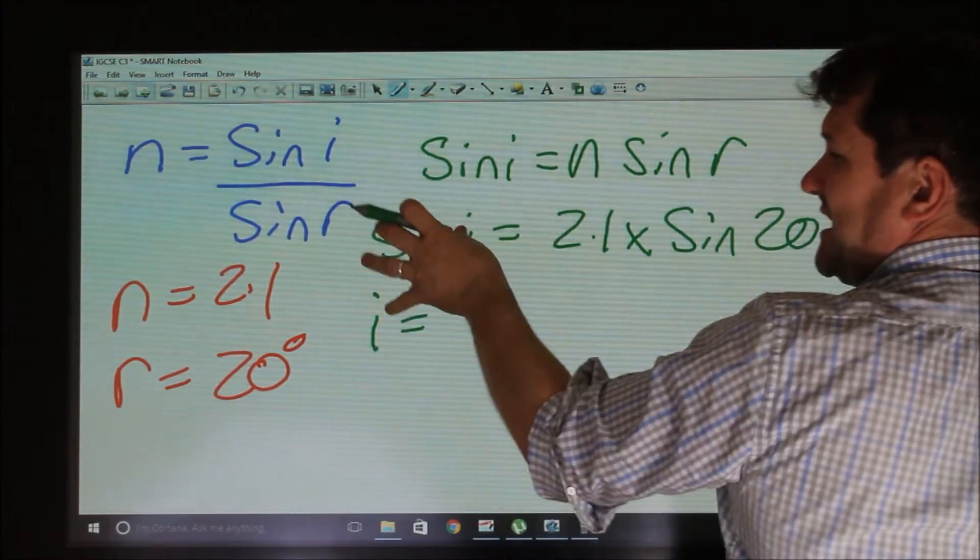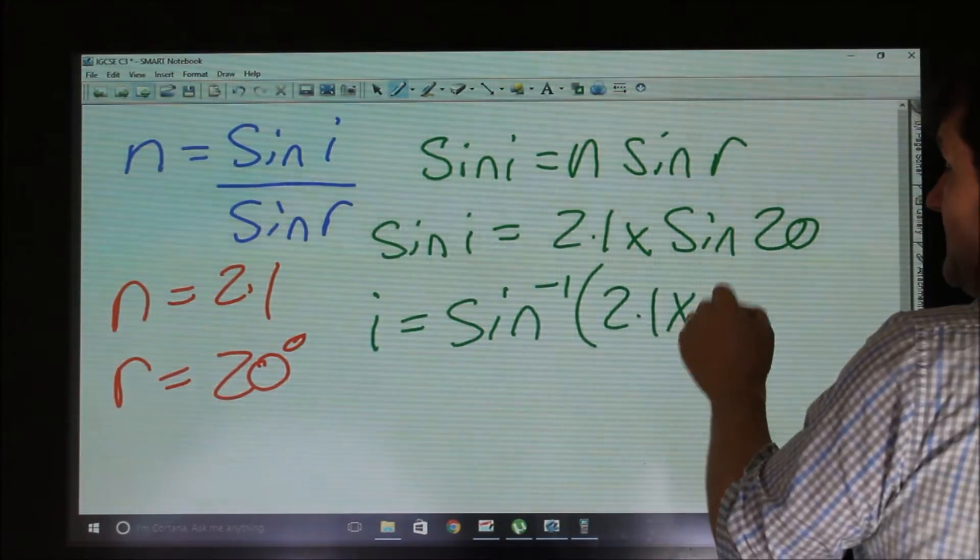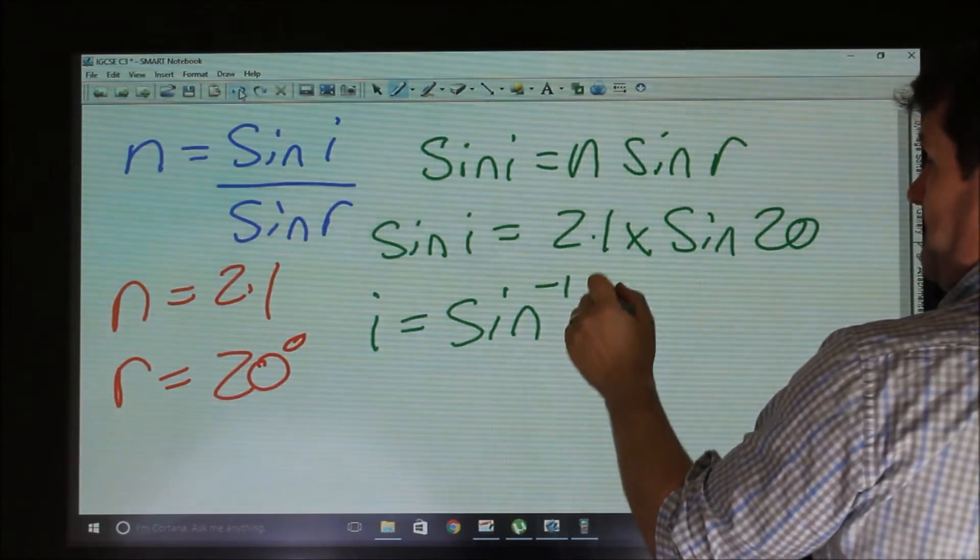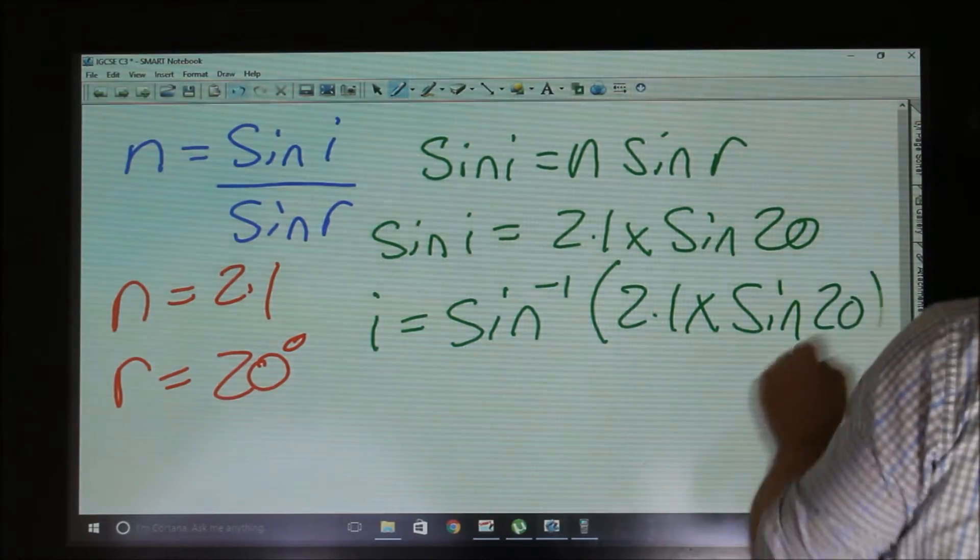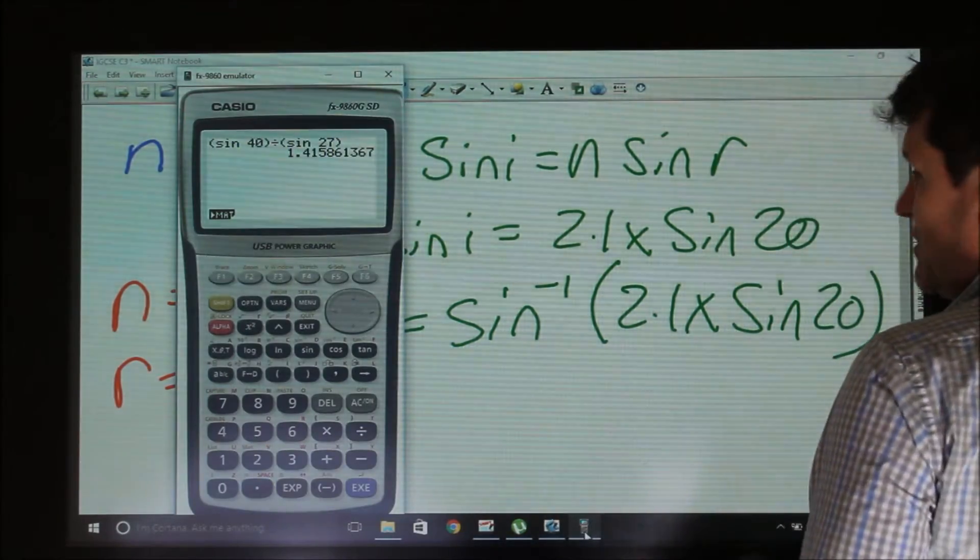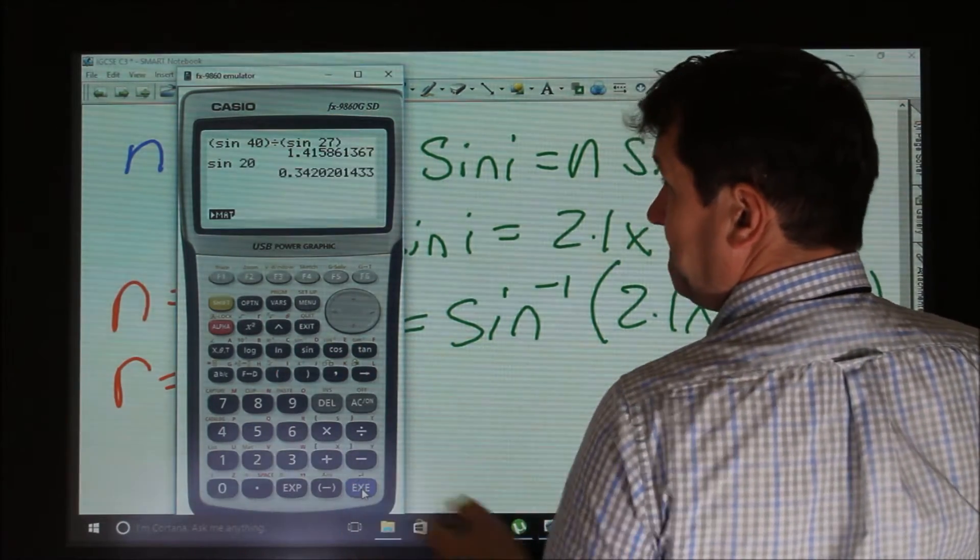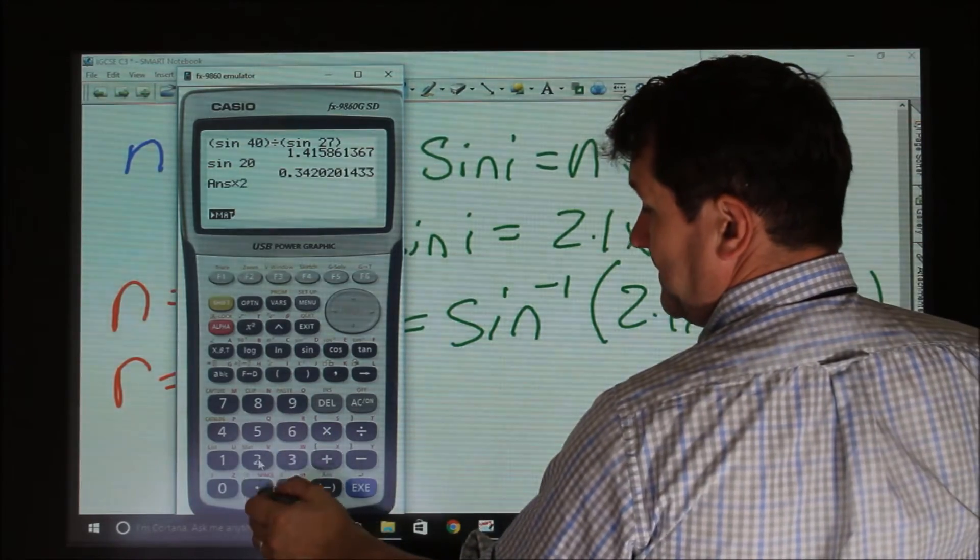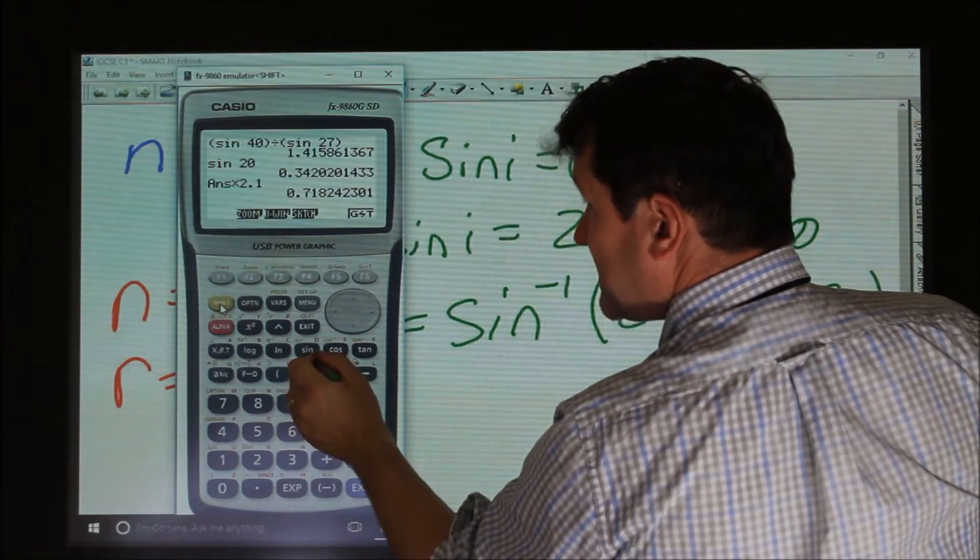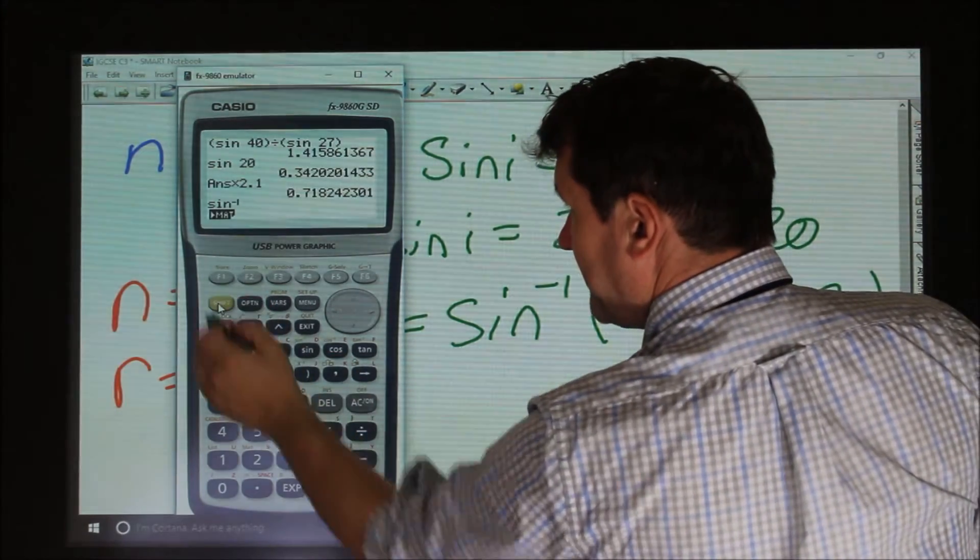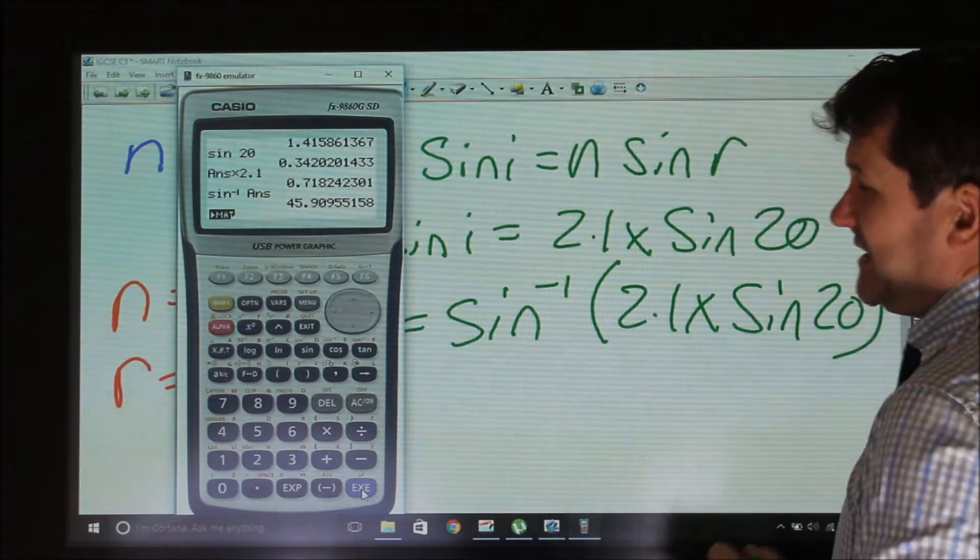So I would then equal, we need to take our sine to the other side, so I would equal sine to the minus 1 of 2.1 sine of 20. And we would put that in our calculator, so we would have the sine of 20 and times that by 2.1. And now if we inverse sine our answer, we get 45.9 degrees.